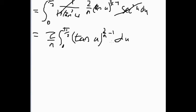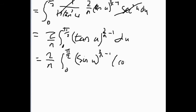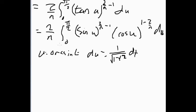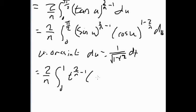To use the beta function we need two things multiplied, so we rewrite tan as sin/cos: (2/n) ∫₀^(π/2) sin^(2/n - 1)(u) · cos^(1 - 2/n)(u) du. Now substitute u = arcsin(t), so du = 1/√(1-t²) dt, and the upper limit changes from π/2 to 1. We get (2/n) ∫₀¹ t^(2/n - 1) · (1-t²)^((1/2 - 1/n)) · (1-t²)^(-1/2) dt.